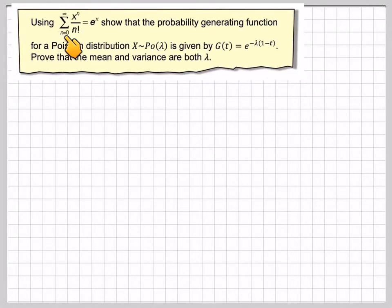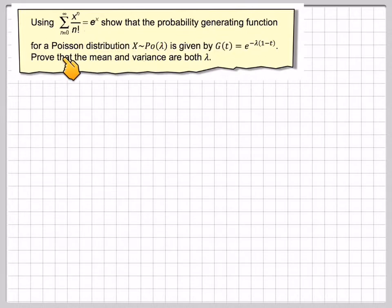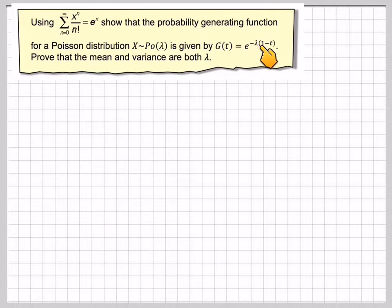Using the fact that the sum from n equals 0 to infinity of x to the n over n factorial equals e to the x, show that the probability generating function for a Poisson distribution, x belonging to Poisson(λ), is given by g(t) = e to the minus λ bracket 1 minus t. Then prove that the mean and the variance are both λ.